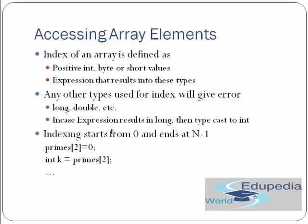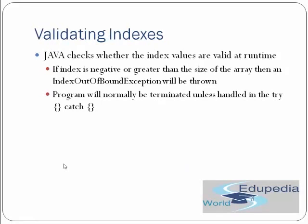Indexing starts from 0 and ends at n-1. For example, primes[2] = 0 assigns a value to the third element, and int k = primes[2] reads it back. Java checks whether index values are valid at runtime — if an index is negative or greater than the array size, an ArrayIndexOutOfBoundsException will be thrown.